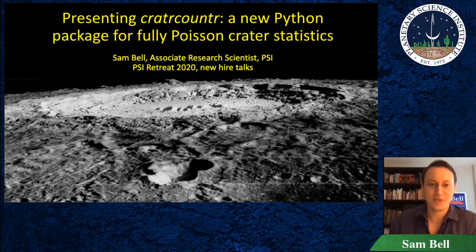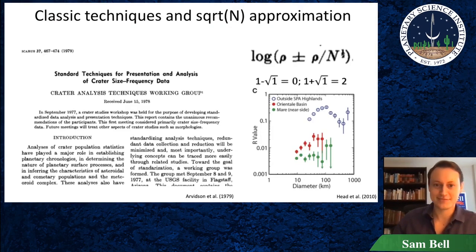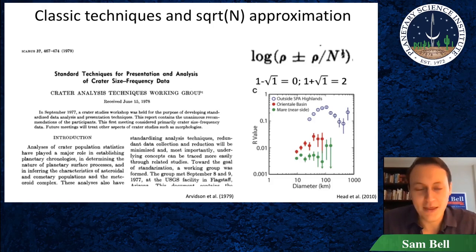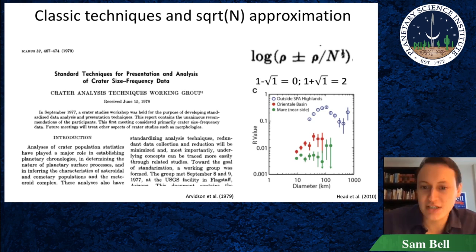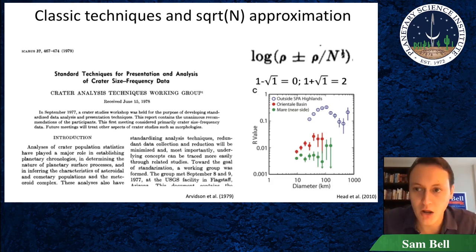I'm presenting a new Python package that I've written to handle fully Poisson crater statistics. As we all know, the very classic, very standard cratering statistics — we've probably all worked with these at some point — were standardized in the late 70s by the Crater Analysis Techniques Working Group, who made some approximations that really made sense in the 1970s.